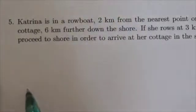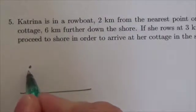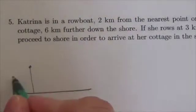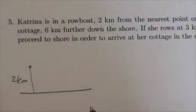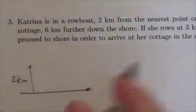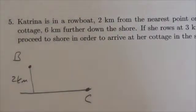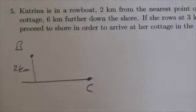So Katrina is out in a rowboat. So here we go. Here's shore. She is out here, I believe they say two kilometers from shore. And her goal is to get to her cottage. So this is her and her boat. She wants to get to point C, her cottage, in the shortest amount of time possible.